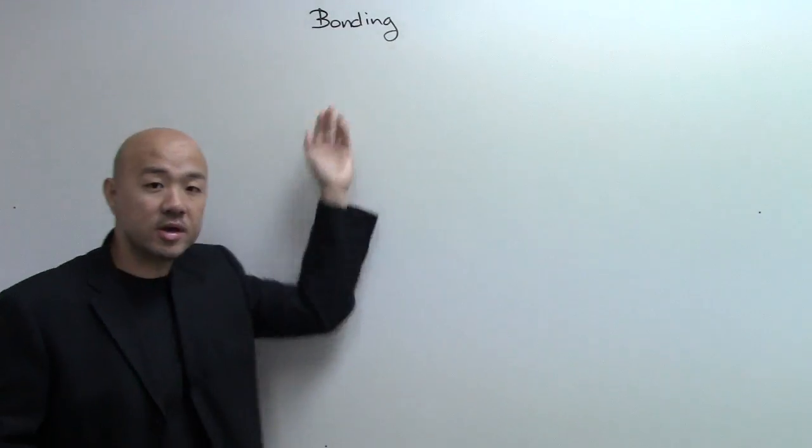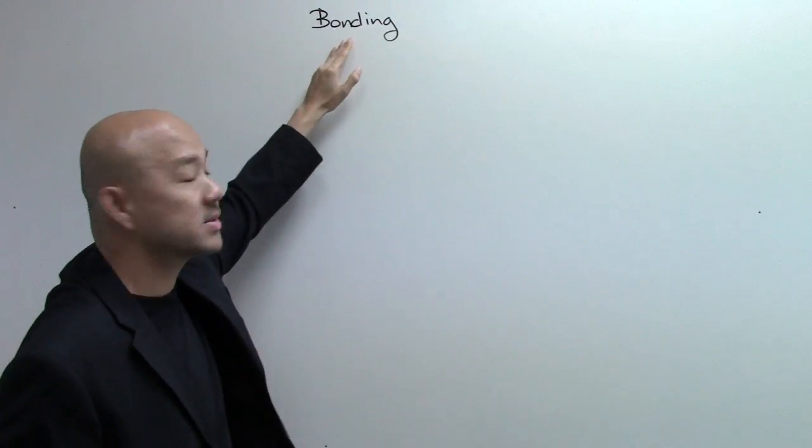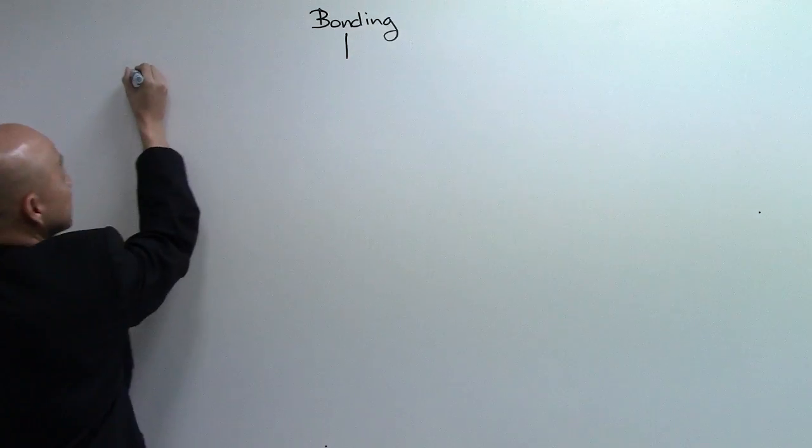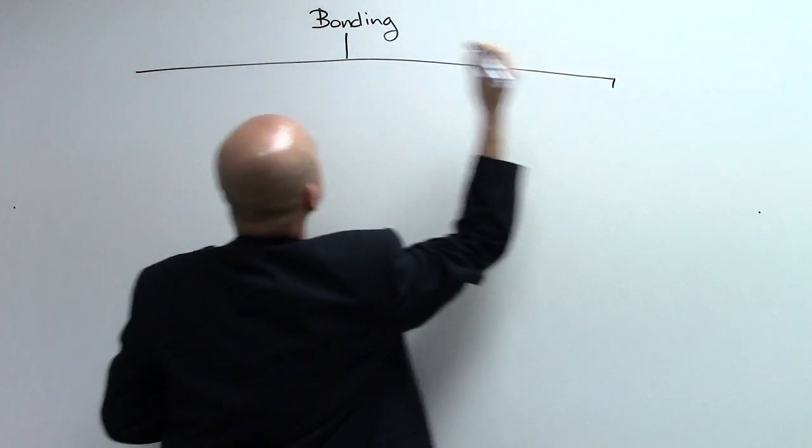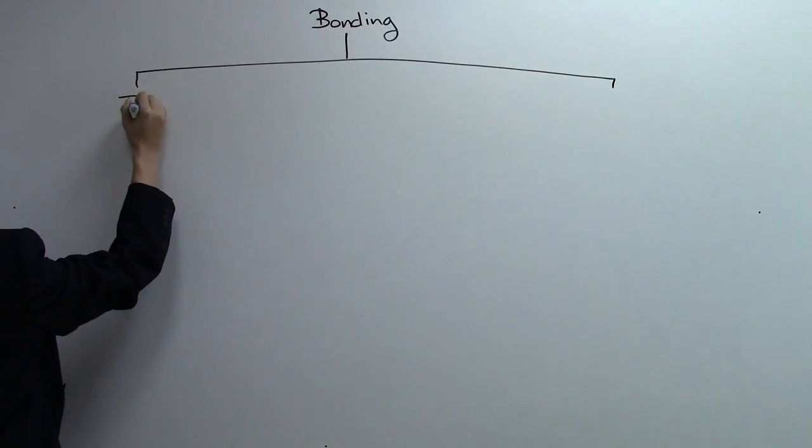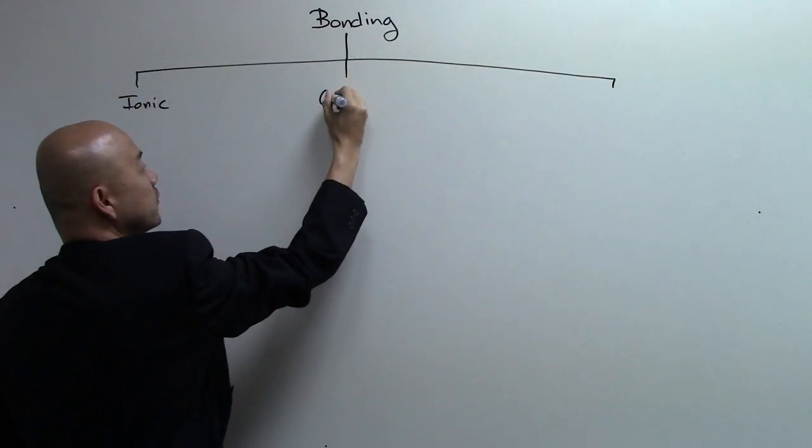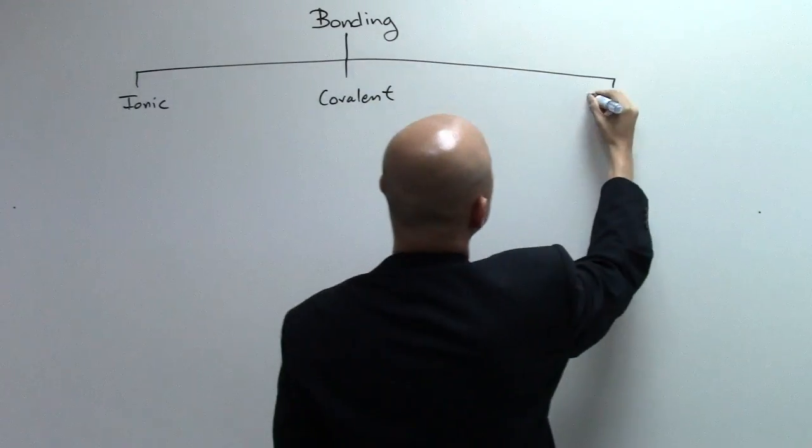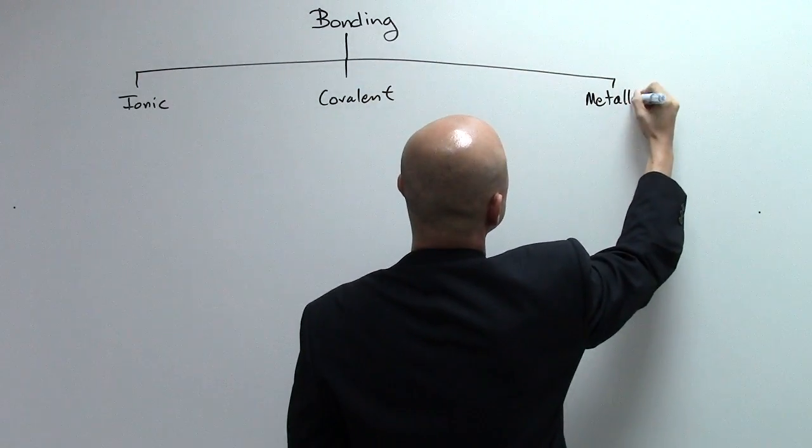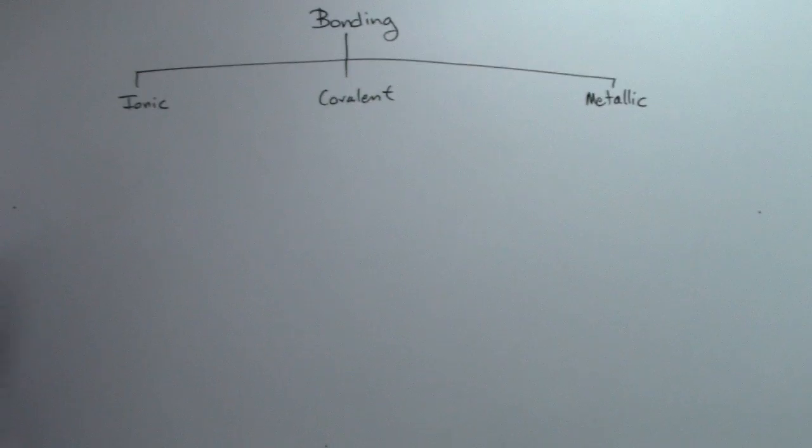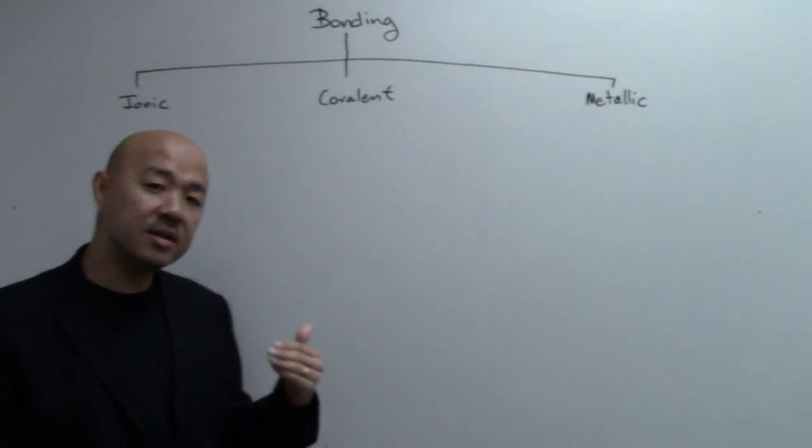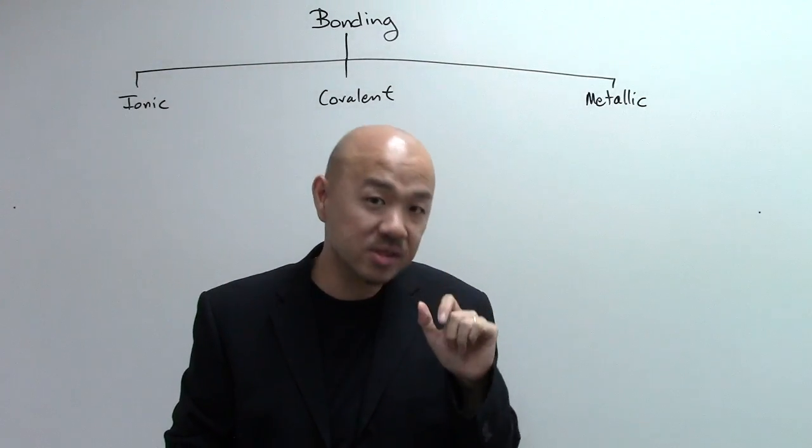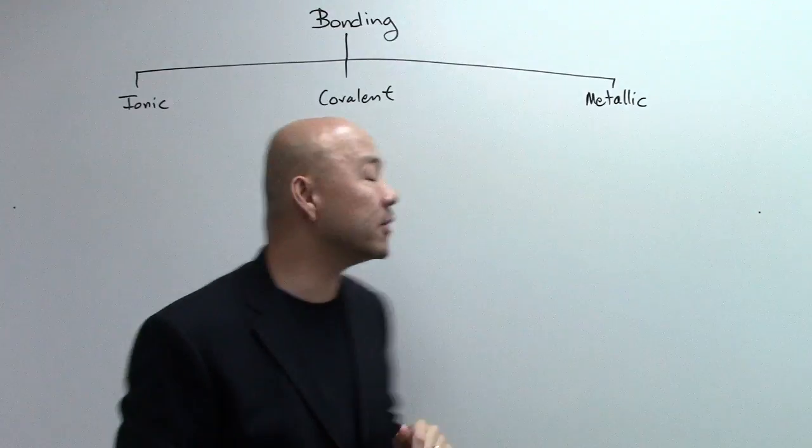So I'm going to draw it on the board over here. This will be bonding. We all know in bonding there are three types of bonding. You have your ionic bonding, you have your covalent bonding, and you have your metallic bonding. We're going to take a look at what are the keywords associated with the concepts in these three types of bonding.